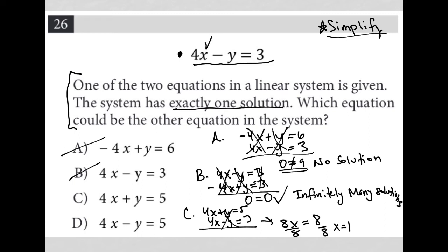When I plug 1 into, let's say, this top equation, I'd have 4 minus y equals 3. Subtract 4, subtract 4. I'd have negative y equals negative 1, and therefore y equals positive 1. And that is one solution. So x equals 1, y equals 1. That's 1 comma 1. That is a single solution. So I'm liking choice C.